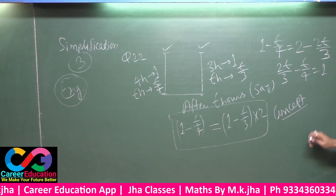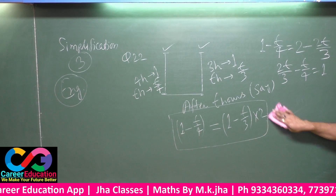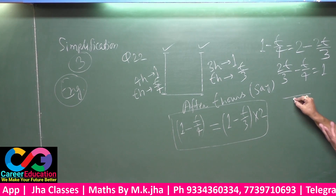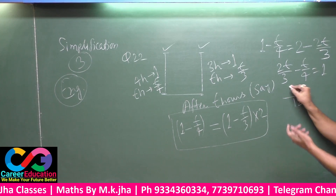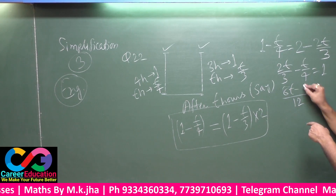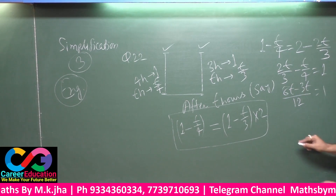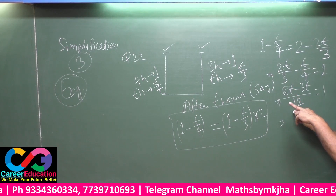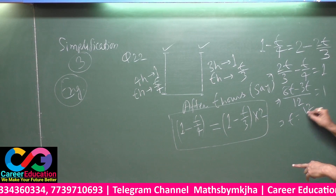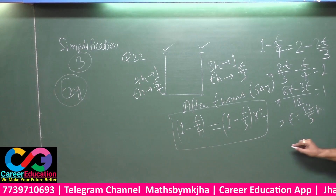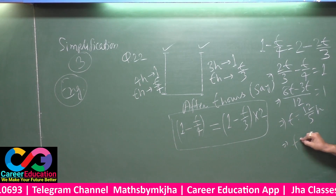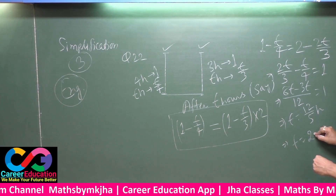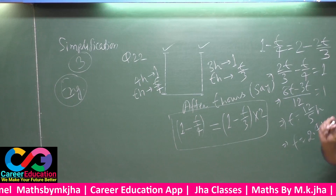Taking the LCM of three and four, which equals twelve: eight t minus three t equals twelve, giving five t equals twelve. Therefore t equals twelve by five hours, which equals 2.4 hours, or two hours twenty-four minutes. This is your final answer.